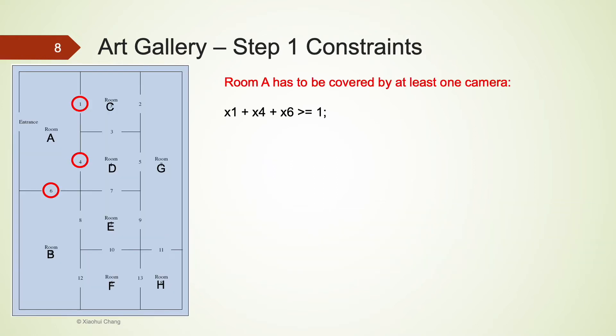The constraints for this problem are somewhat unique and interesting. The management would like to provide full security coverage for all 8 rooms in the gallery. Let's look at room A in the top left corner. Room A has 3 openings: 1, 4 and 6. To provide coverage for this room, we don't need to install 3 cameras at all 3 openings. All we need to do is to have at least 1 camera installed in one of those 3 openings.